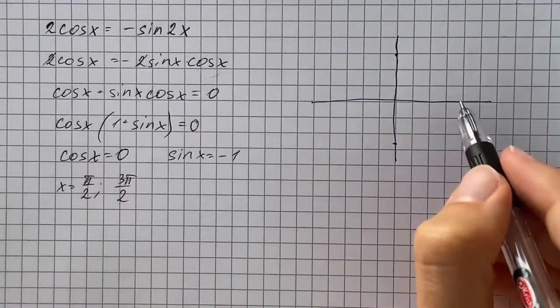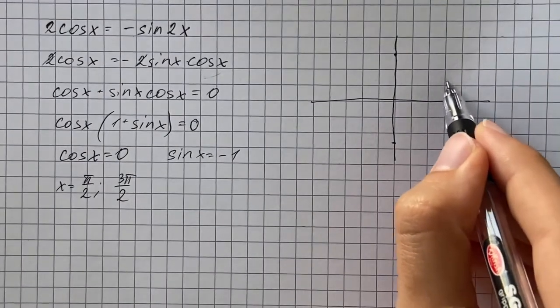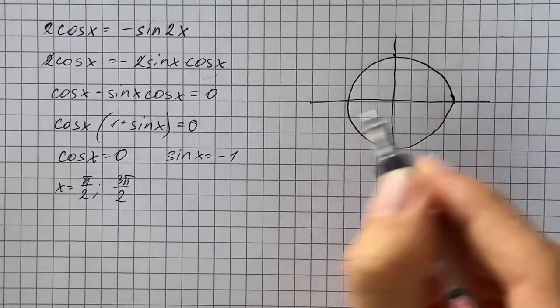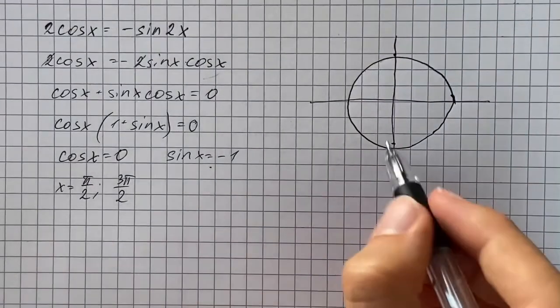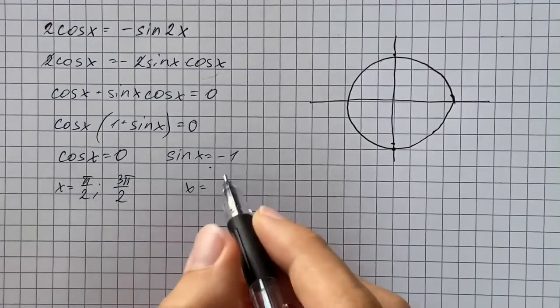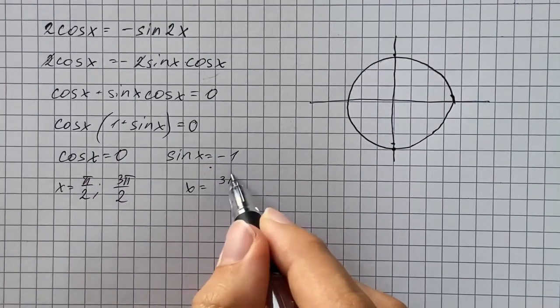And sine of x corresponds to y-coordinate. So sine of x is going to be equal to negative 1 at the bottom of the unit circle, and that's going to be when x equals 3 pi over 2.